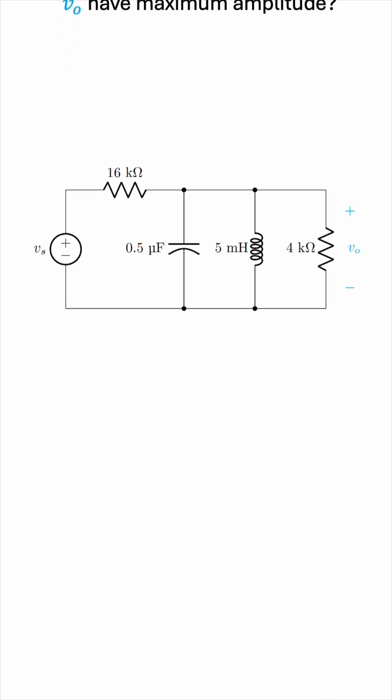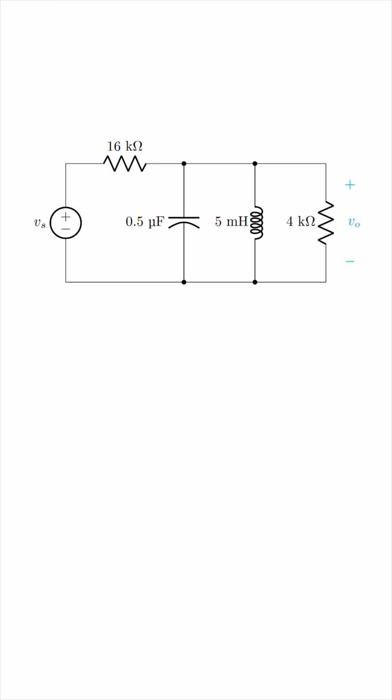We're talking frequency, so let's draw the frequency domain circuit. The source voltage will become capital Vs. Notice the bold V because it's a phasor quantity. Same thing for the output voltage. It becomes a capital VO, and we replace each component with its impedance.